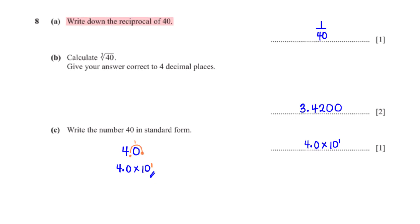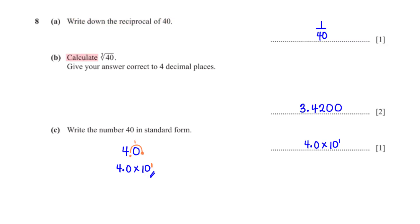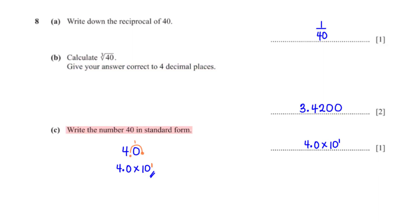Write down the reciprocal of 40. The reciprocal of any number is 1 over that number, so the reciprocal of 40 is 1/40. Calculate the cube root of 40, giving your answer to four decimal places. Typing cube root of 40 into the calculator gives 3.4200 rounded to four decimal places.